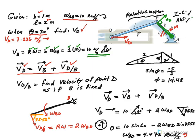B is 1 meter and omega AB is 10 radians per second, so we get 10 meters per second. Notice that since the angle is already 30 degrees here, this angle must be 60 degrees. So the velocity of B is 10 meters per second at 60 degrees.